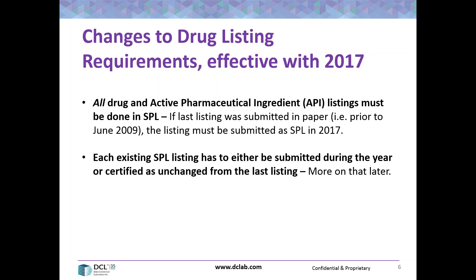The first slide focuses on the changes to the drug listing requirements that became effective in 2017. The new regulations require that all drug and active pharmaceutical ingredient listings must be done in SPL. If the last listing was submitted in paper prior to June 2009, you must submit the file as SPL. I say 2017, but there may be some leeway with the FDA, but I would suggest that you go about getting your drugs listed.